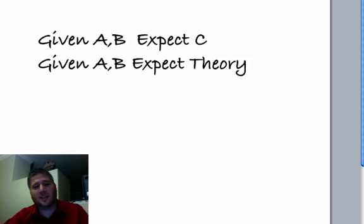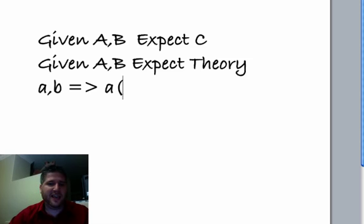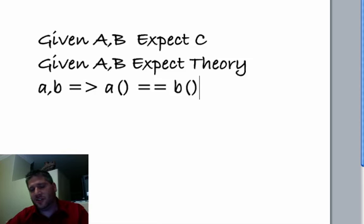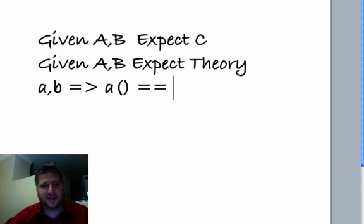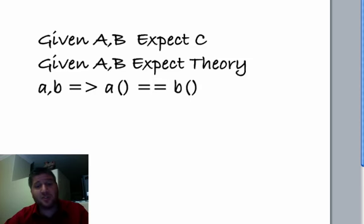One of the places I see it a lot is with two variations. The hash code is where two things should produce the same result. So given A and B, then A of something is equivalent to B of something. And you see that kind of theory hit a lot. Actually that's the theory that I see the most use from in my personal experience.